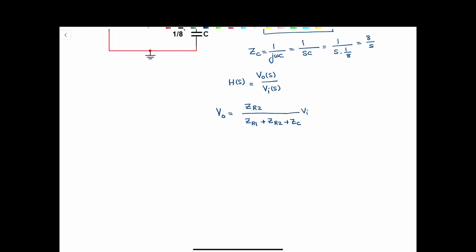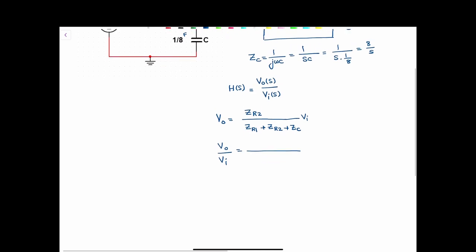I'm going to take Vi to the other side of the equation. Therefore, Vo over Vi will be equal to - Z of R2 is 2 ohms, Z of R1 is 10 plus 2 plus 8 over S. So that will give us 2 over 12 plus 8 over S.